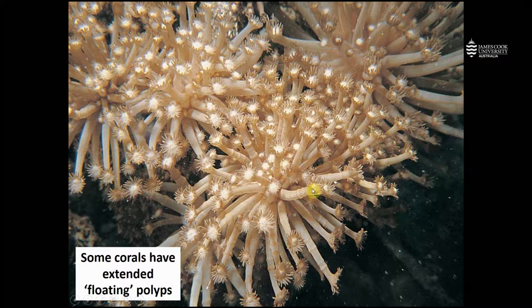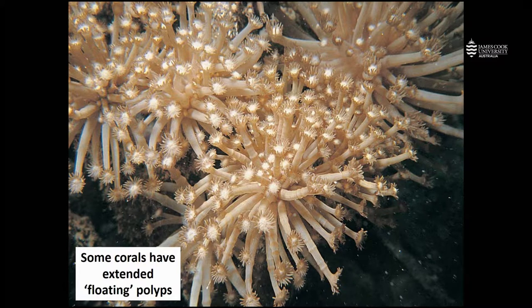These are the polyps here, and these are the tentacles around the edges of the polyps. This is actually a columnar growth form, but you can't see that from the coral tissues.